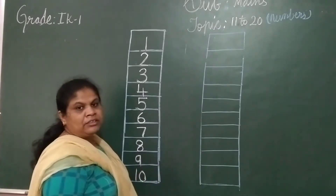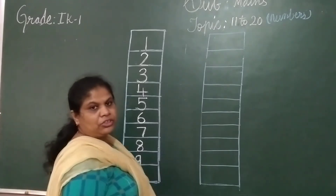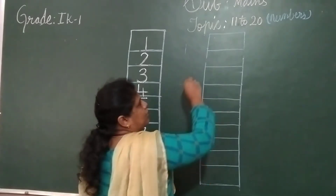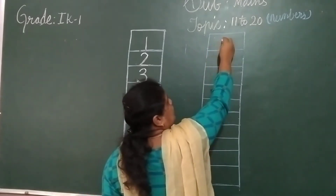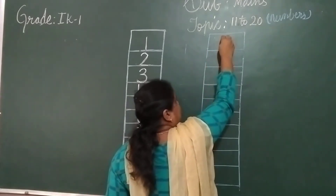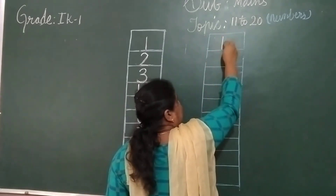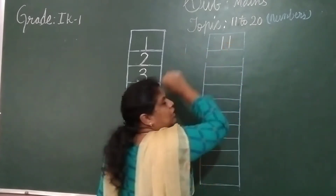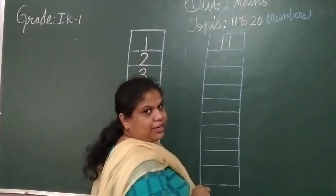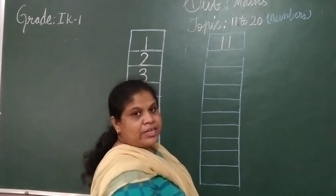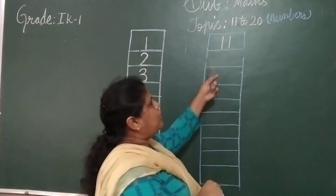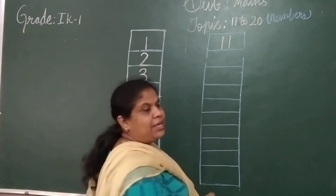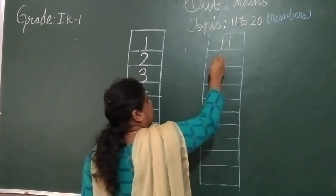After 10 the number continues: 11. How do you write 11? One, one — 11. One, one — 11.